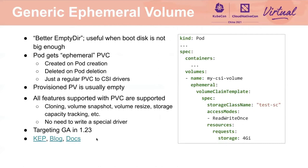Next, I'm going to talk about generic ephemeral volumes. This feature allows any existing storage drivers that support dynamic provisioning to be used as an ephemeral volume with the volume life cycle bound to a pod. It can be used to provide scratch storage that is different from the root disk — for example, persistent memory or a separate local disk on that node. All storage class parameters for volume provisioning are supported. All features supported with PVCs are supported, such as storage capacity tracking, snapshotting, cloning, and volume resizing. This feature is beta since the 1.21 release and is targeting GA in 1.23.